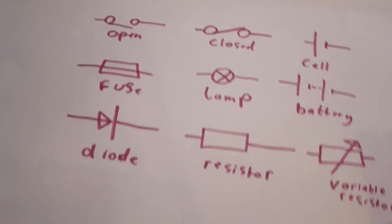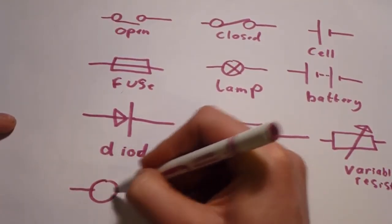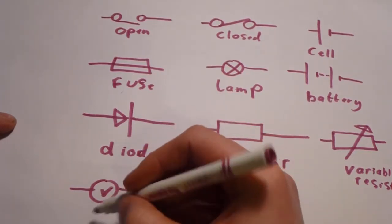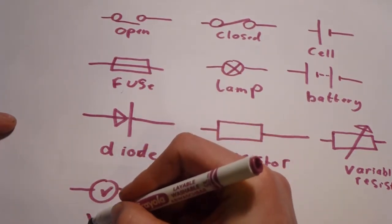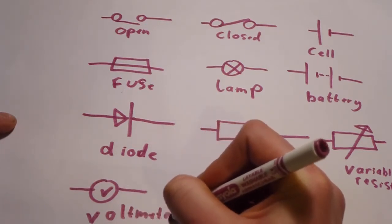After the resistor, we have a voltmeter, which is used to measure potential difference through the circuit.